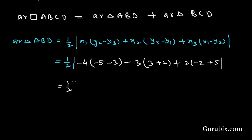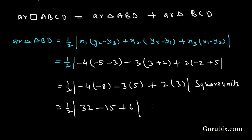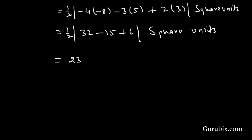Calculating: (1/2) |(-4)(-5 - 3) + (-3)(3 - (-2)) + 2((-2) - (-5))| = (1/2) |(-4)(-8) + (-3)(5) + 2(3)| = (1/2) |32 - 15 + 6| = (1/2)(23) = 23/2 square units.